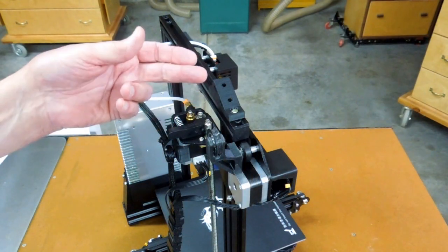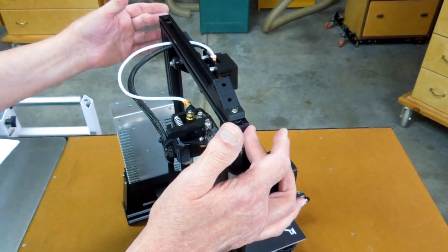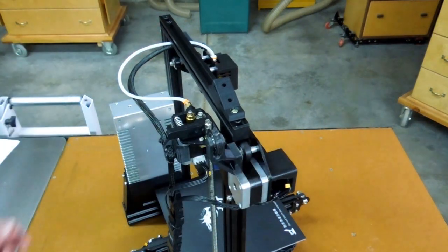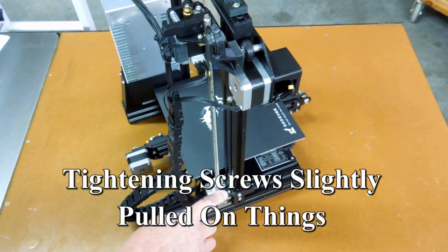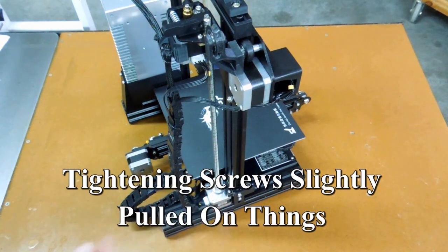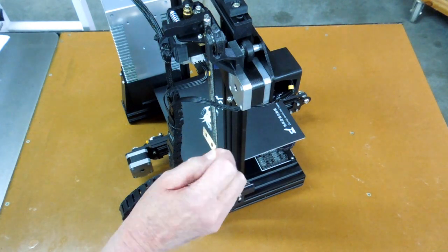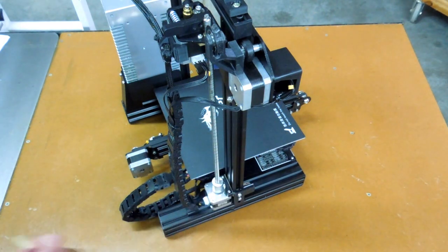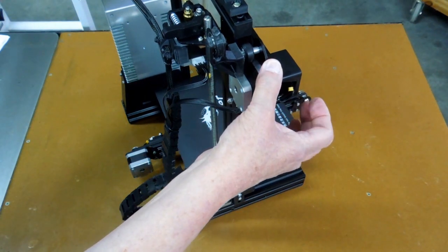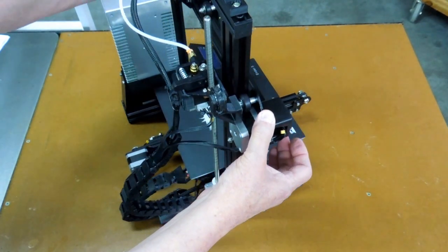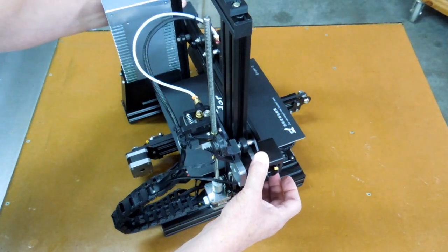When I completed assembly and put this cross member between the two towers, I found I had to put a little paper shim behind the mounting bracket for that Z stepper. That's a piece of file folder stock, two holes punched in it. After I put that in there, everything is in perfect alignment.